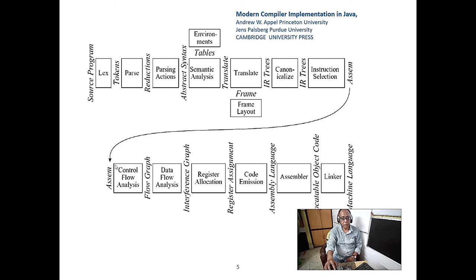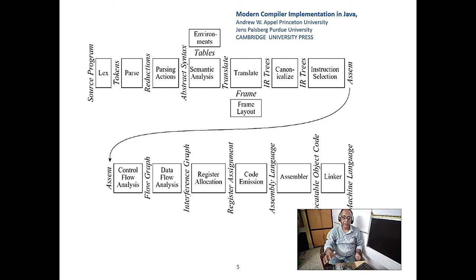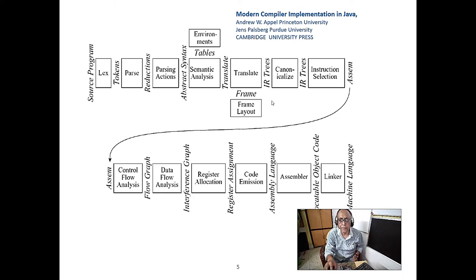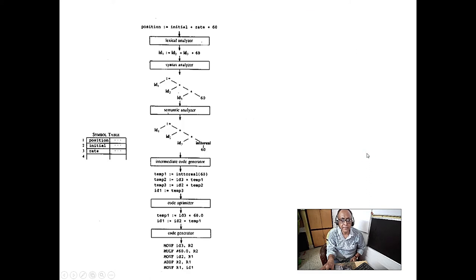Other important areas include control flow, data flow, and register allocation. A computer has many registers, and how to allocate them efficiently is a key concern. This covers code emission. Let's go to the next slide.